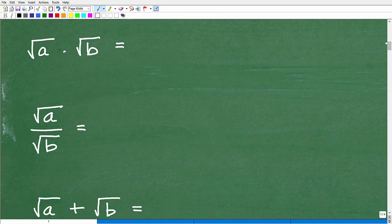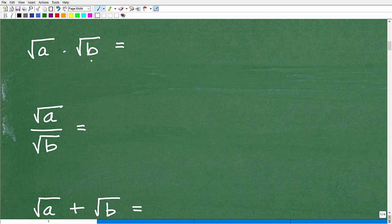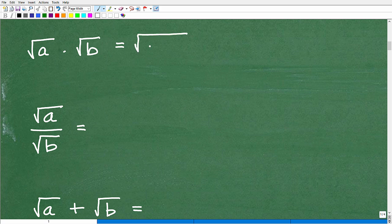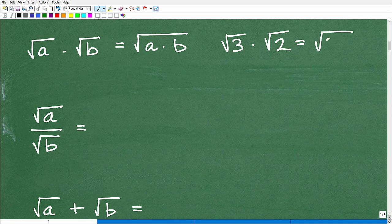So let's go to the first one. When we multiply two square roots, the square root of A times the square root of B, that's equal to the square root of A times B. So you want to write that down in your notes if you don't have that. So let's take a look at a basic example. Square root of 3 times the square root of 2. How can I do this problem? Well, you just write one big square root. This is going to be square root of 3 times 2, which of course is the square root of 6.